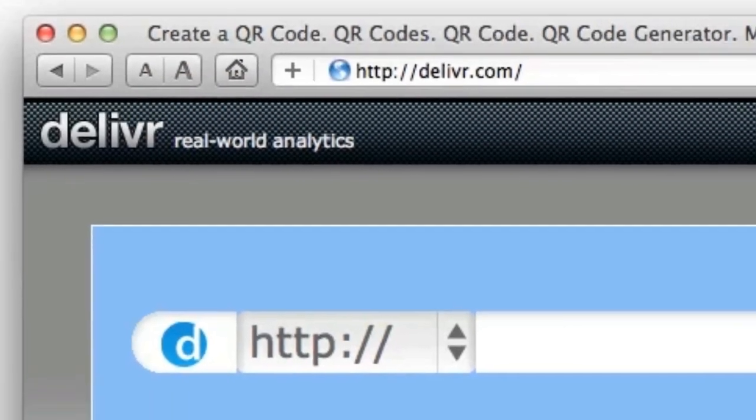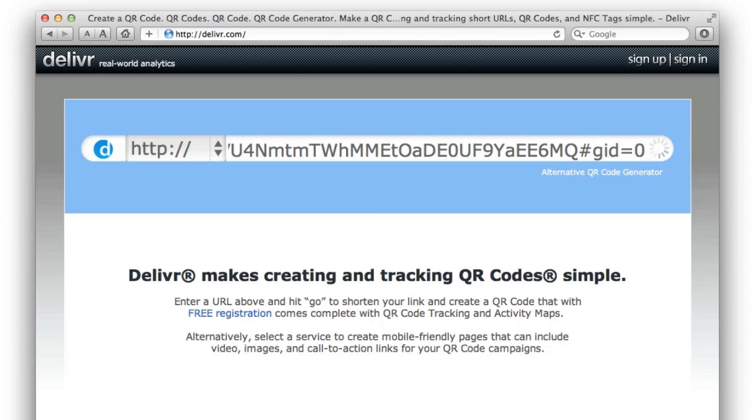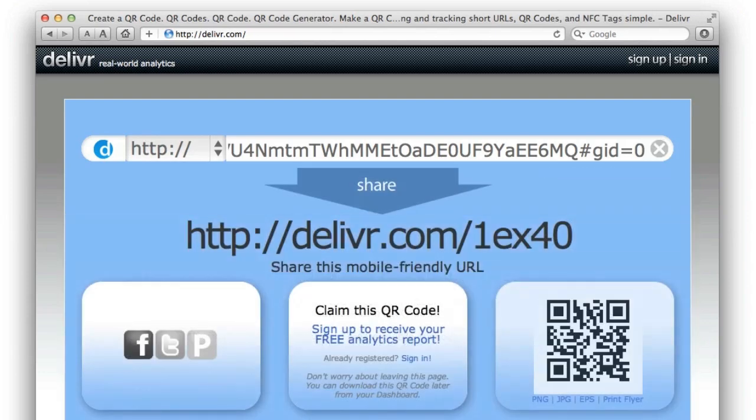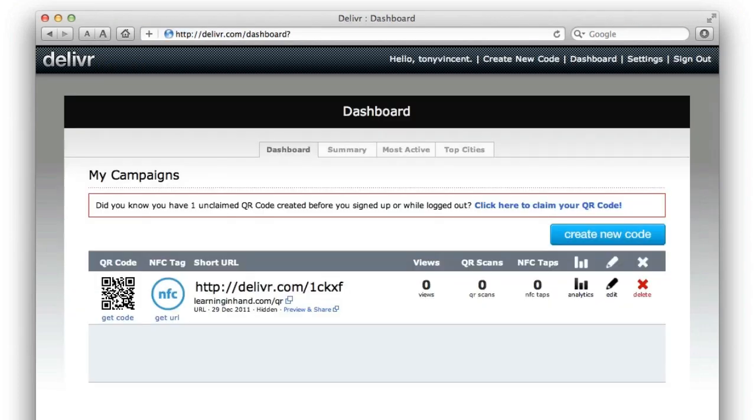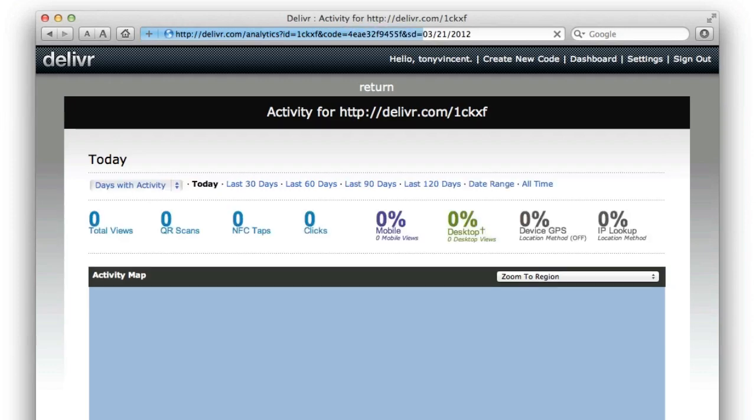Delivr.com is a QR code generating website that automatically shortens the URLs you input. If you sign into an account, Delivr provides detailed statistics about how many times the code was scanned, when and where it was scanned.